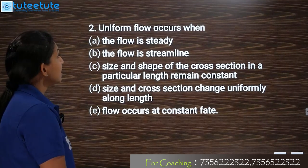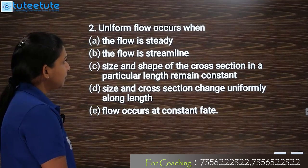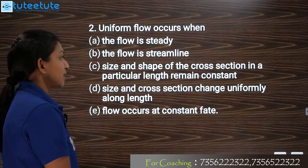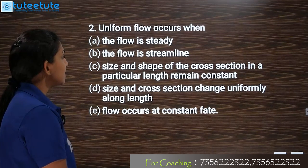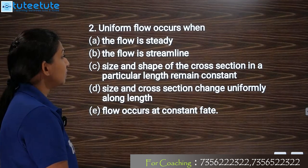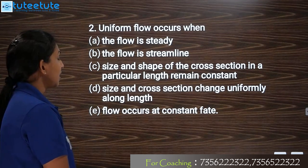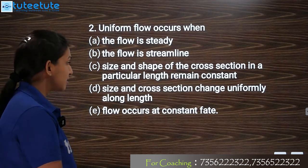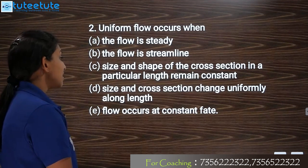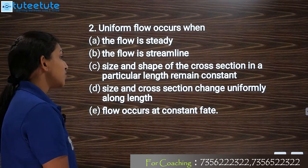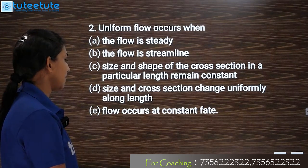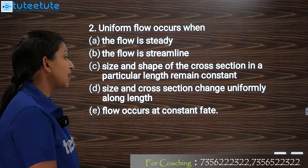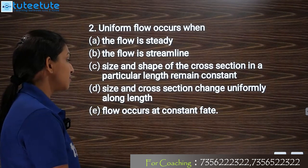The options are: first, the flow is steady; the flow is streamlined; the size and shape of the cross-section in a particular length remains constant; size and cross-section changes uniformly along length; or flow occurs at a constant rate.